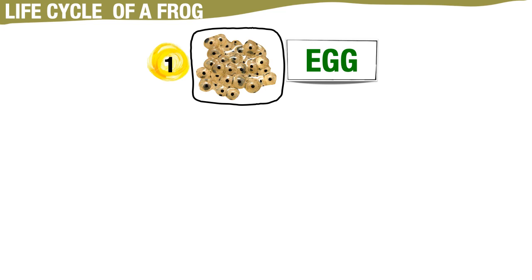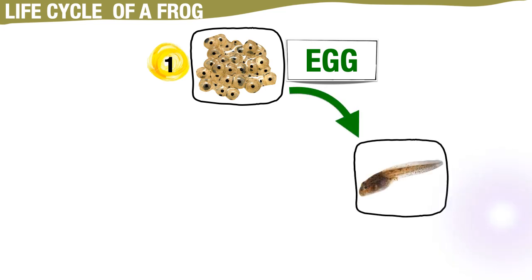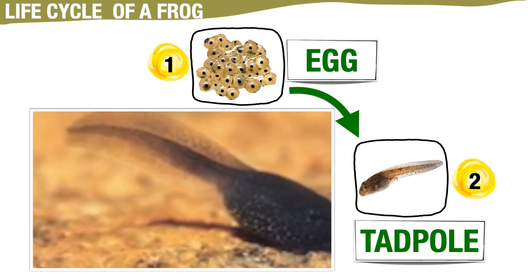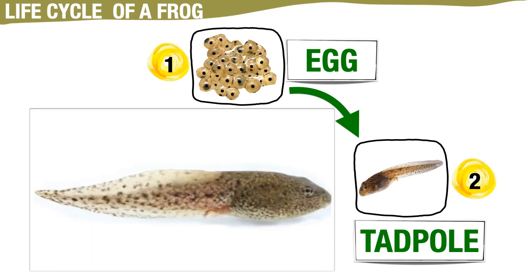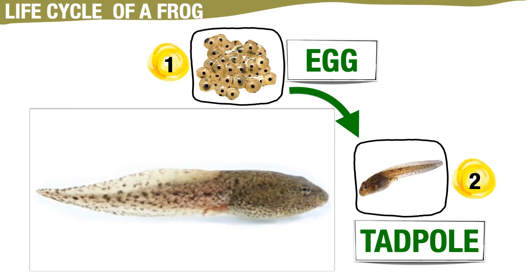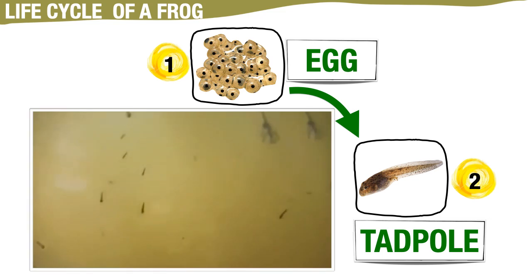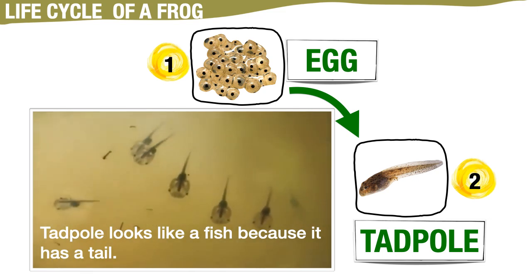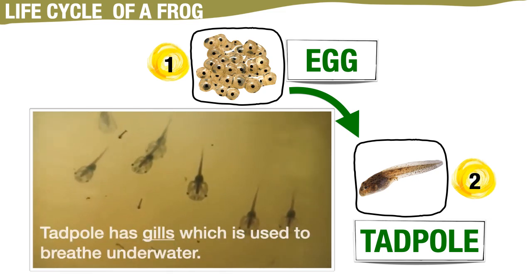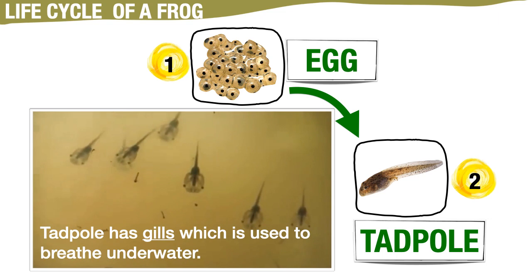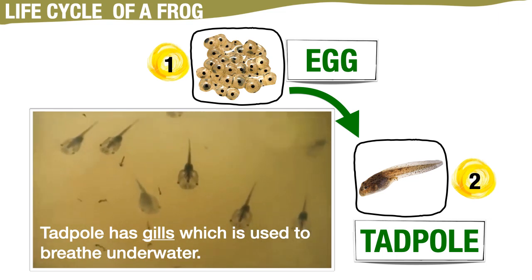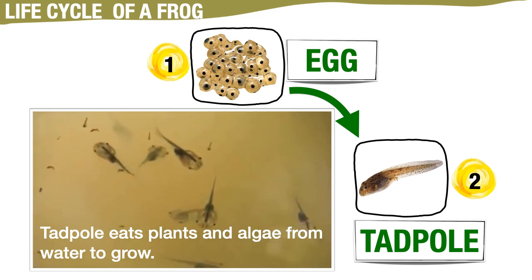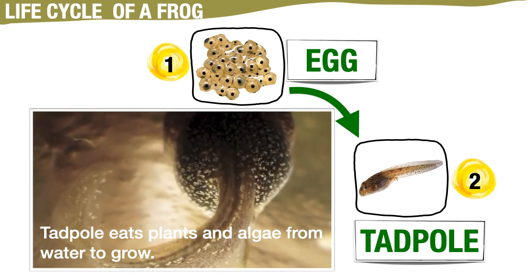Each egg hatches into a tadpole. When the tadpole hatches, it looks more like a fish than a frog because it has a tail. The tadpole has gills, which are used to breathe under water. The tadpole eats plants and algae from water to grow.